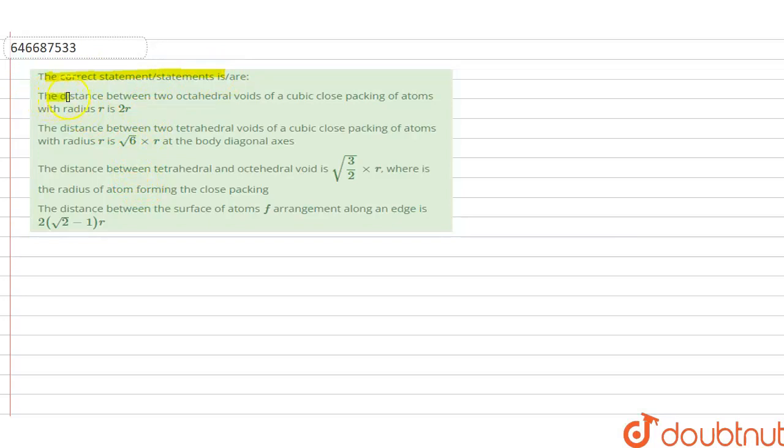So the first fact is the distance between the two octahedral voids of cubic close packing of atoms with radius r is 2r. This is correct as we know that there is an octahedral void at center and edge, and their distance comes out to be 2r.